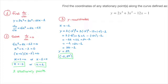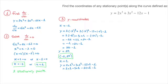For the second stationary point at x equals 1: y equals 2 times 1 cubed plus 3 times 1 squared minus 12 times 1 minus 1, which equals 2 plus 3 minus 12 minus 1, giving y equals negative 8. So the second stationary point has coordinates (1, −8).